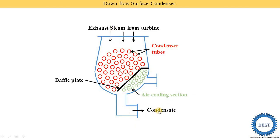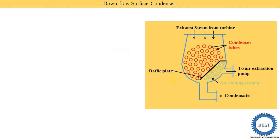This condensate is supplied to the boiler using a water pump. Air is removed from the air cooling section and supplied to the air extraction pump.